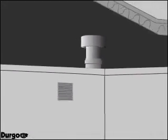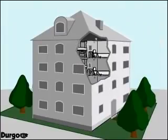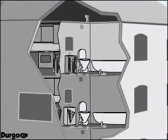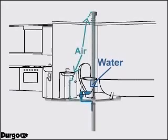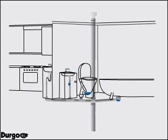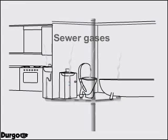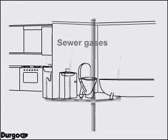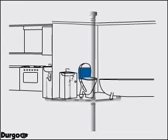Durgo air admittance valves are common components in wastewater vent systems. Whenever a discharge occurs, negative pressure is created. Negative pressure can siphon water traps, allowing unpleasant odors to enter the building. The Durgo air admittance valve eliminates that problem.